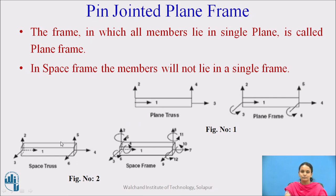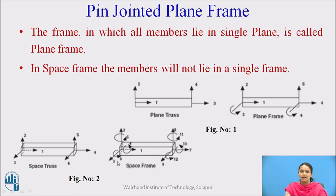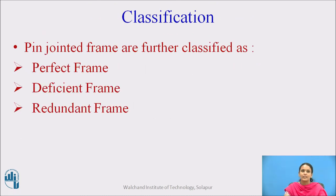Electrical or mobile towers are perfect examples of space frames, where members are in different vertical, horizontal, and inclined directions. Plane frames are further classified as perfect frame, deficient frame, and redundant frame.